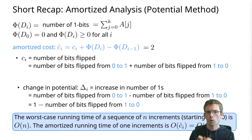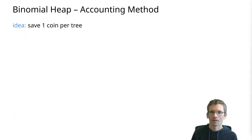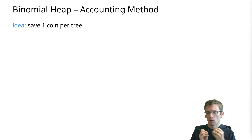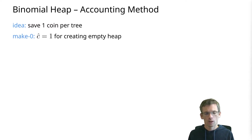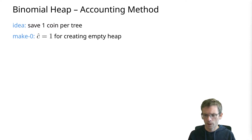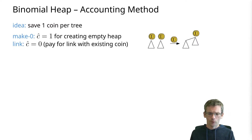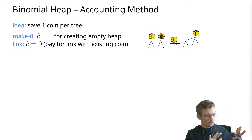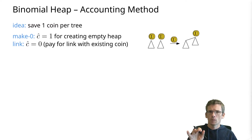Now we are equipped for the amortized analysis of binomial heaps using the accounting method. The idea is to save one coin for every binomial tree. For make-zero: building an empty heap costs constant work but we don't need to save coins, so we set the amortized cost to one. For linking: both trees come with a coin, we use one for the linking itself and the remaining coin stays with the resulting tree. So linking has an amortized cost of zero.